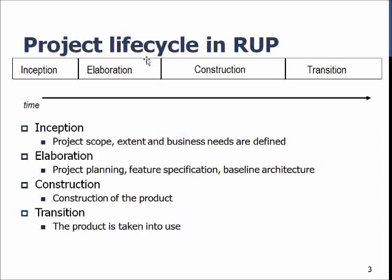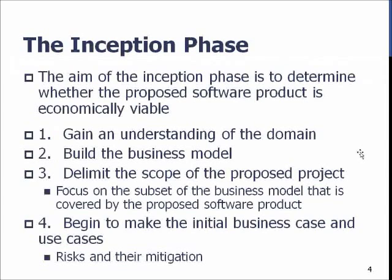The actual architecture definition work happens in Elaboration. During Inception, the idea is to create the domain model and the business model. The first and most important thing is to gain understanding of the domain in which we work — for example, if we're building something for airport security, we need to understand how airport security works; if for a game console system, we need to understand that domain and its audience; or if for law firms, we need to understand their documentation work.